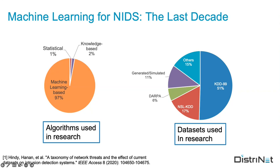This heavily reduces the amount of work a human needs to do to keep the network intrusion detection system up to date. Of course, when you're using machine learning or deep learning AI-based approaches, you need a lot of data to train on, and this data needs to be of high quality. That's actually where we start to see the first big problem in the field of NIDS.